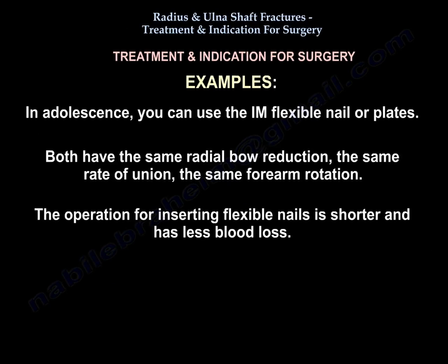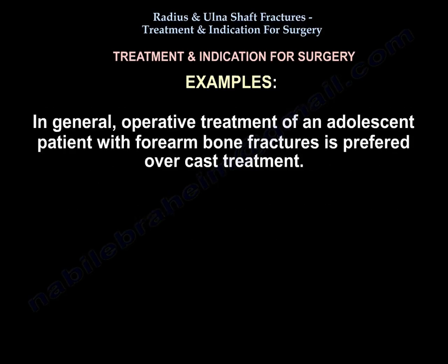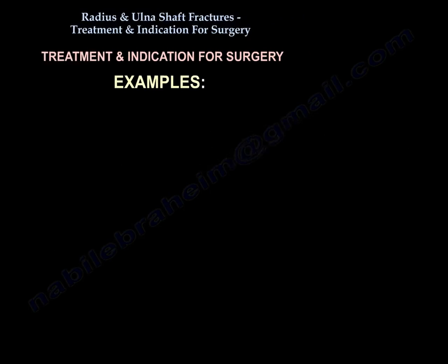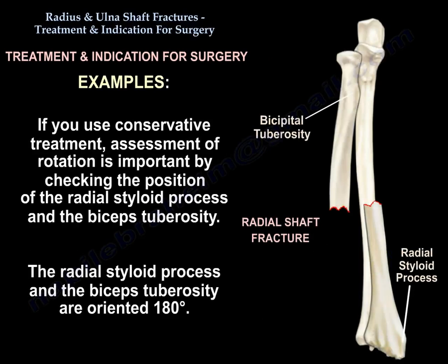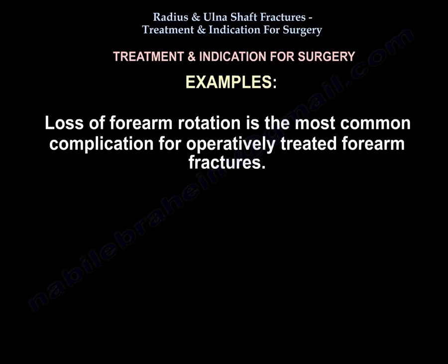In adolescents, you can use the IM flexible nail or plates. Both have the same radial bone reduction, the same rate of union, and the same forearm rotation. The operation for inserting flexible nails is shorter and has less blood loss. Operative treatment of adolescent patients with forearm bone fractures is preferred over cast treatment. If conservative treatment is used, assessment of rotation is important by checking the position of the radial styloid and the biceps tuberosity — they are oriented 180 degrees to each other. Loss of forearm rotation is the most common complication for operatively treated forearm fractures.